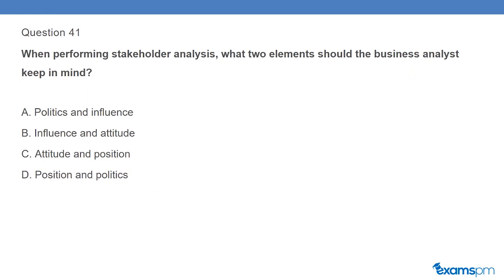Question 41: When performing stakeholder analysis, what two elements should the business analyst keep in mind? A. Politics and influence. B. Influence and attitude. C. Attitude and position. D. Position and politics.